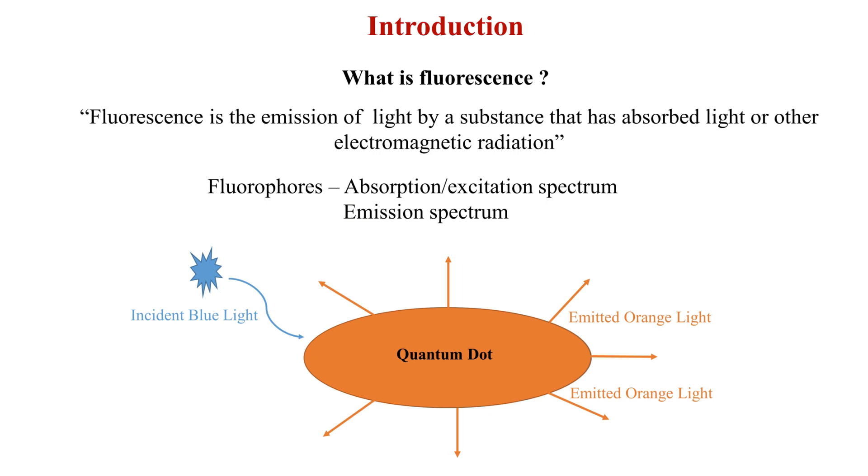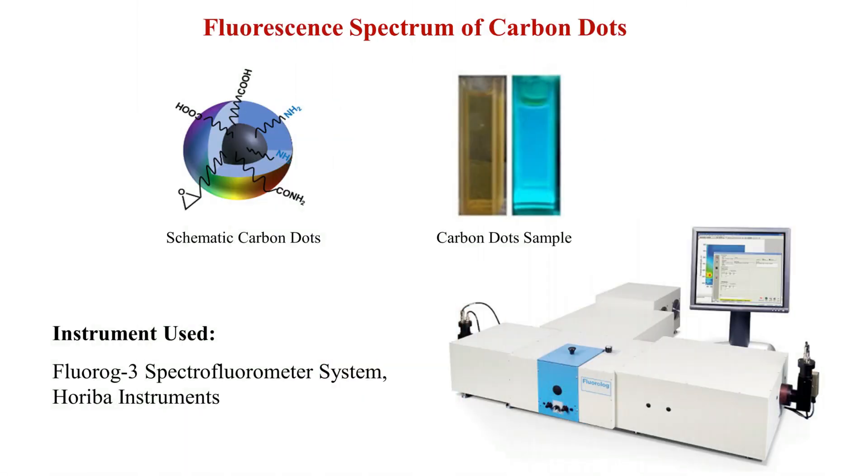The schematic shows the emission of orange light from a quantum dot by irradiation of blue light. The presence of functional groups in carbon dots helps in emitting blue light under UV irradiation, which is characterized using the Fluorolog3 spectrophotometer system in this demonstration.